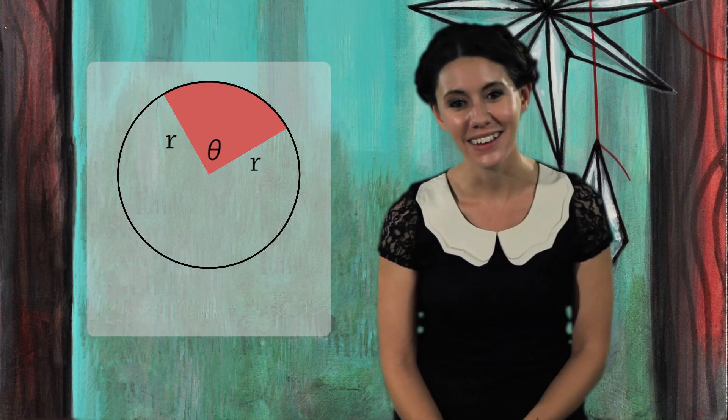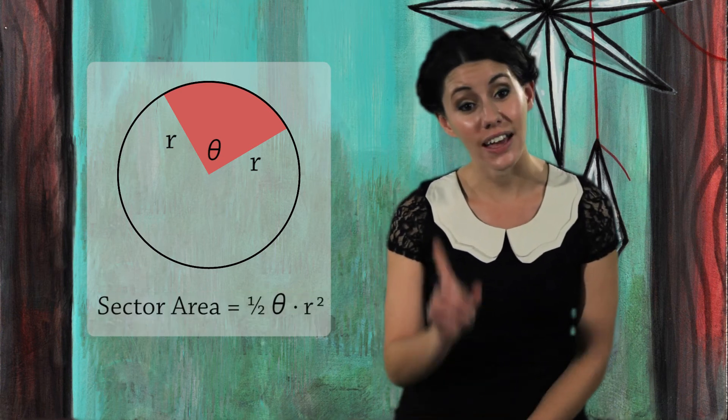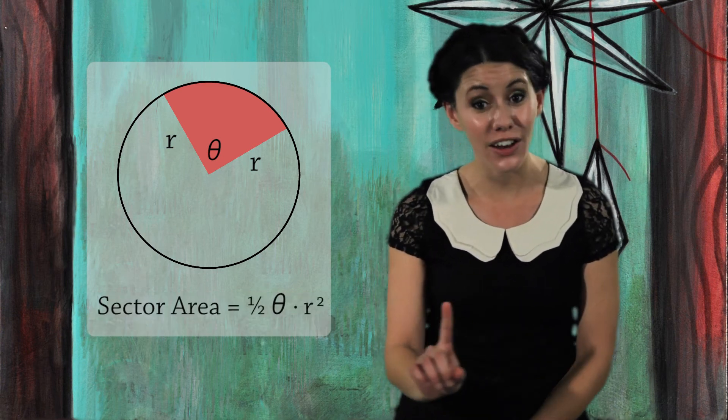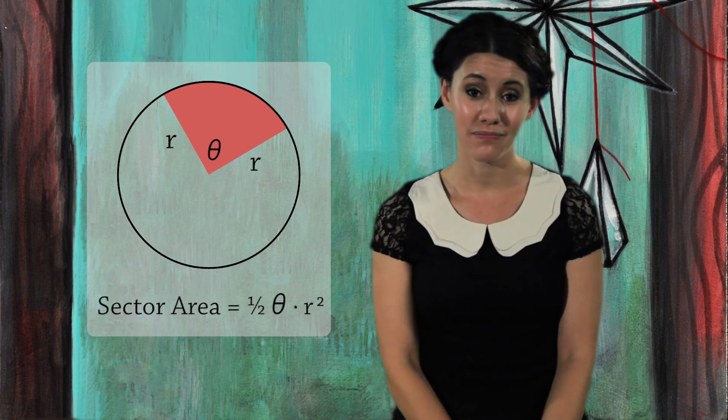To find the area of a sector, you need two things: the radius and the angle. Oh, and the formula — three things. The area is one-half theta r squared.